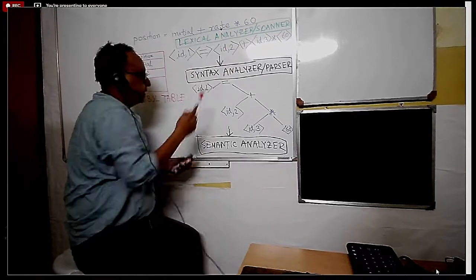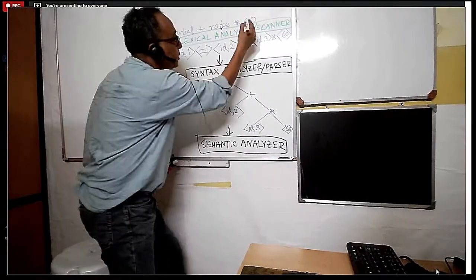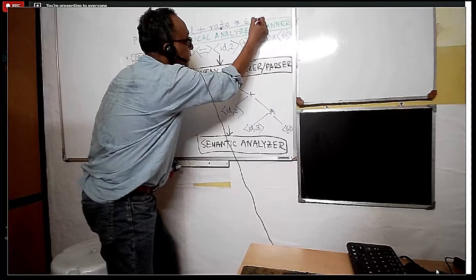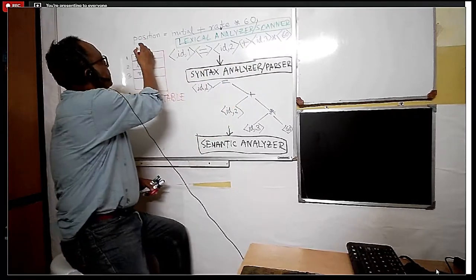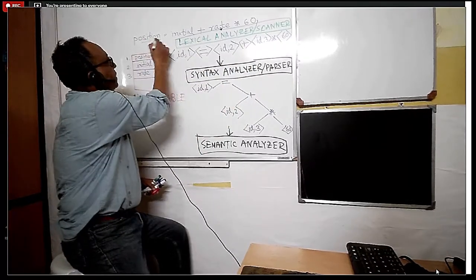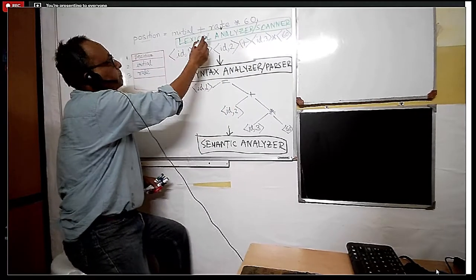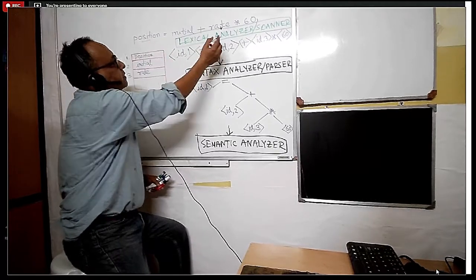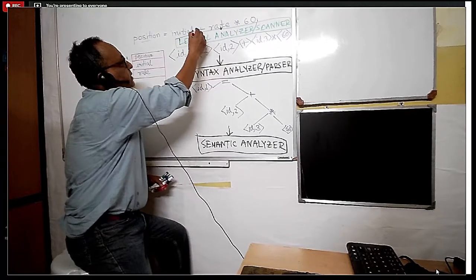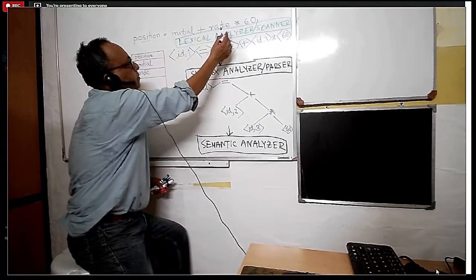This is a sentence — you can start with a symbol, or this is a program fragment. This is one variable, another variable. Take it as a C language example. This is an operator symbol — start.